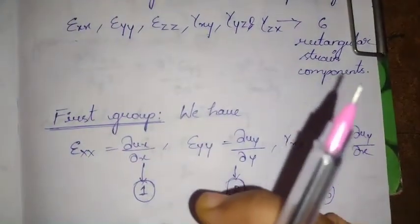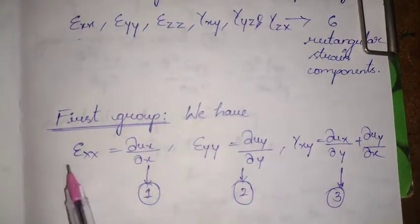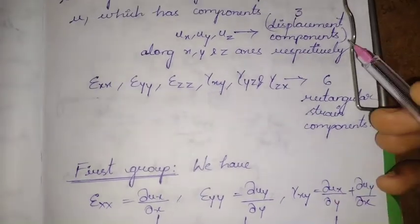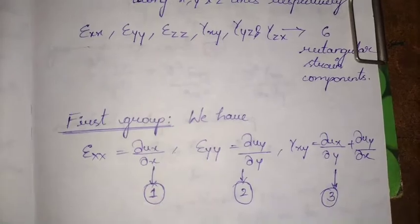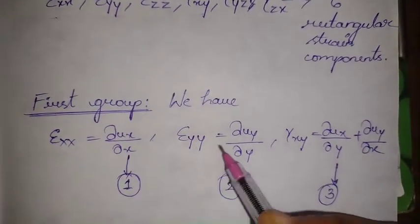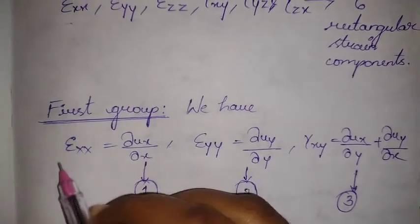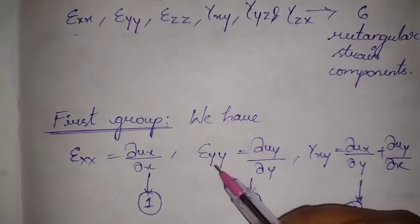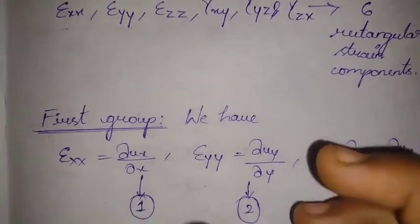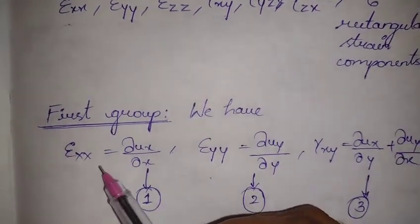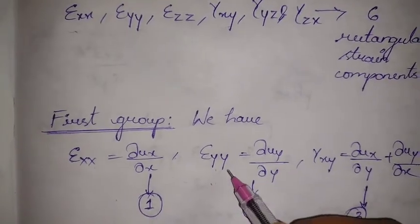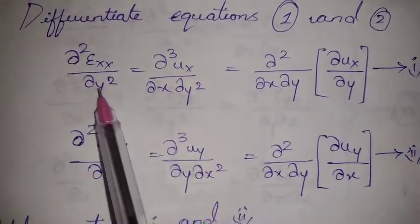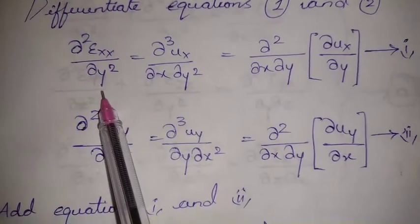For the first group compatibility conditions, we consider the relation between the rectangular strain components and the displacement components. We double-differentiate the first equation (epsilon xx) with respect to y, and double-differentiate the second equation (epsilon yy) with respect to x. So for epsilon xx we differentiate with respect to y, and for epsilon yy we differentiate with respect to x.